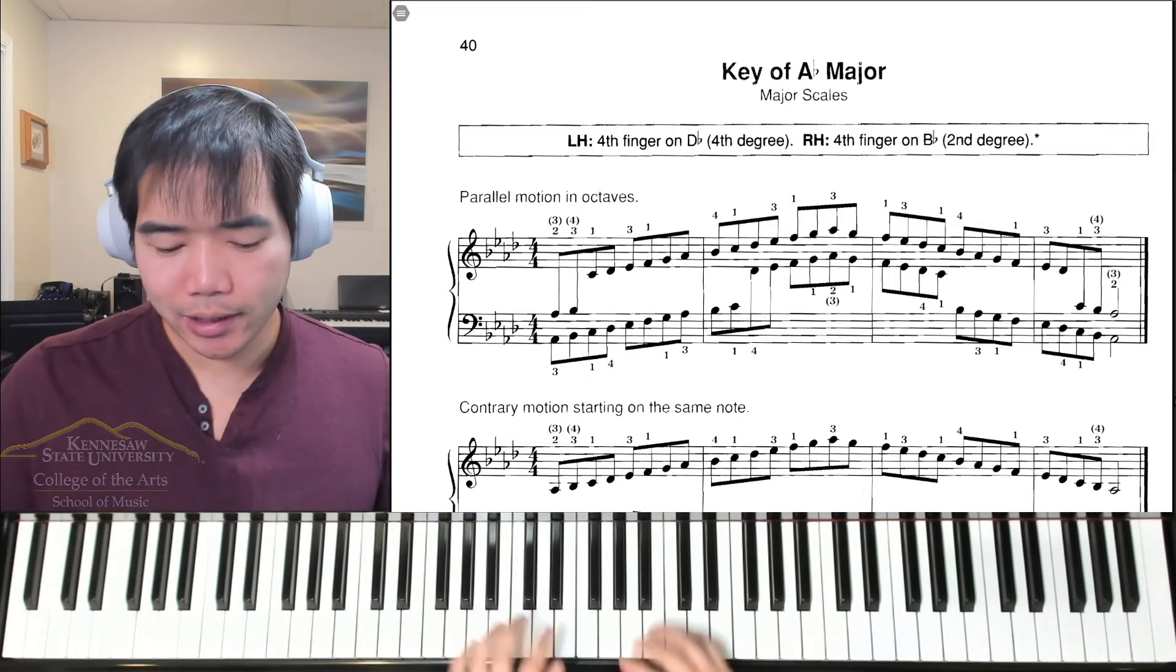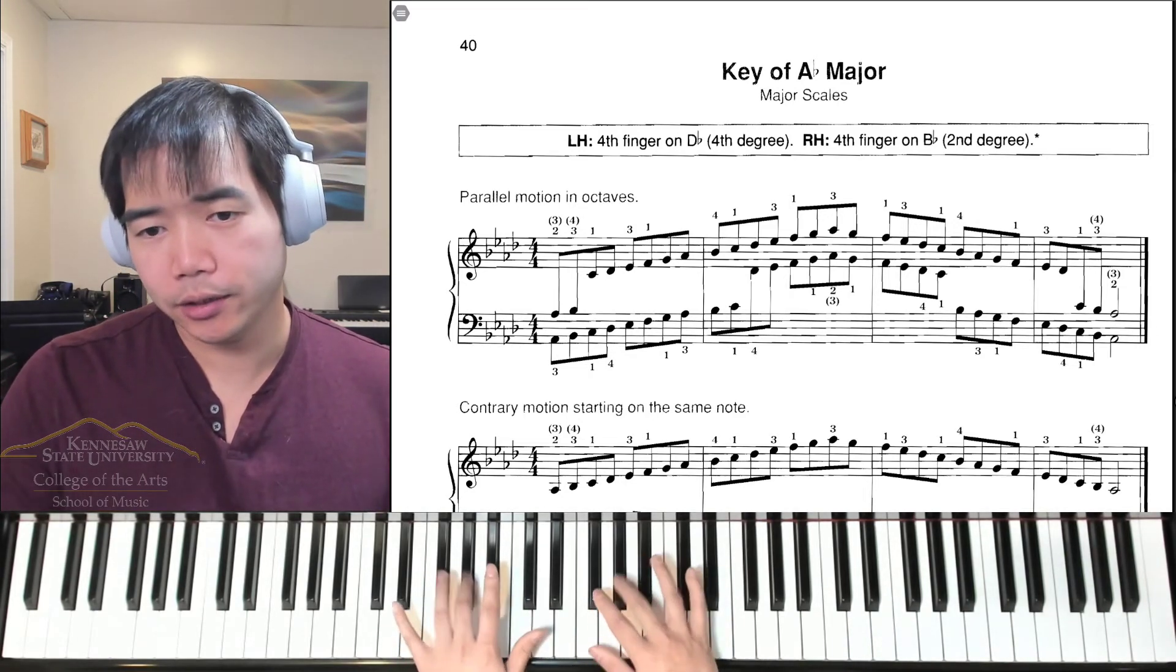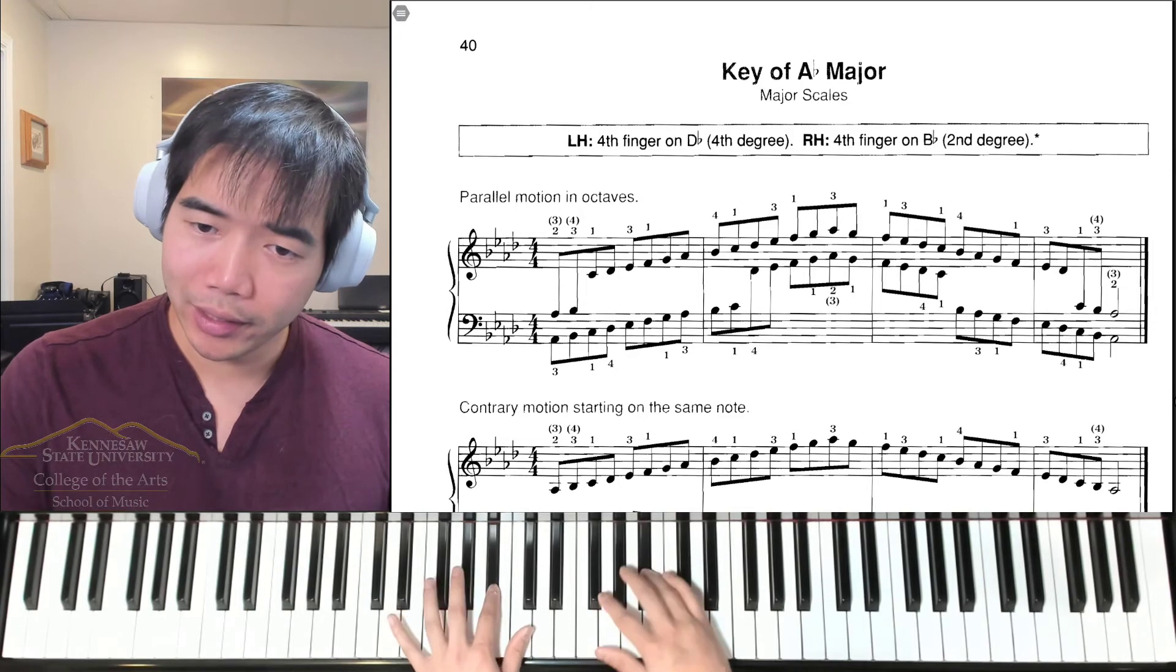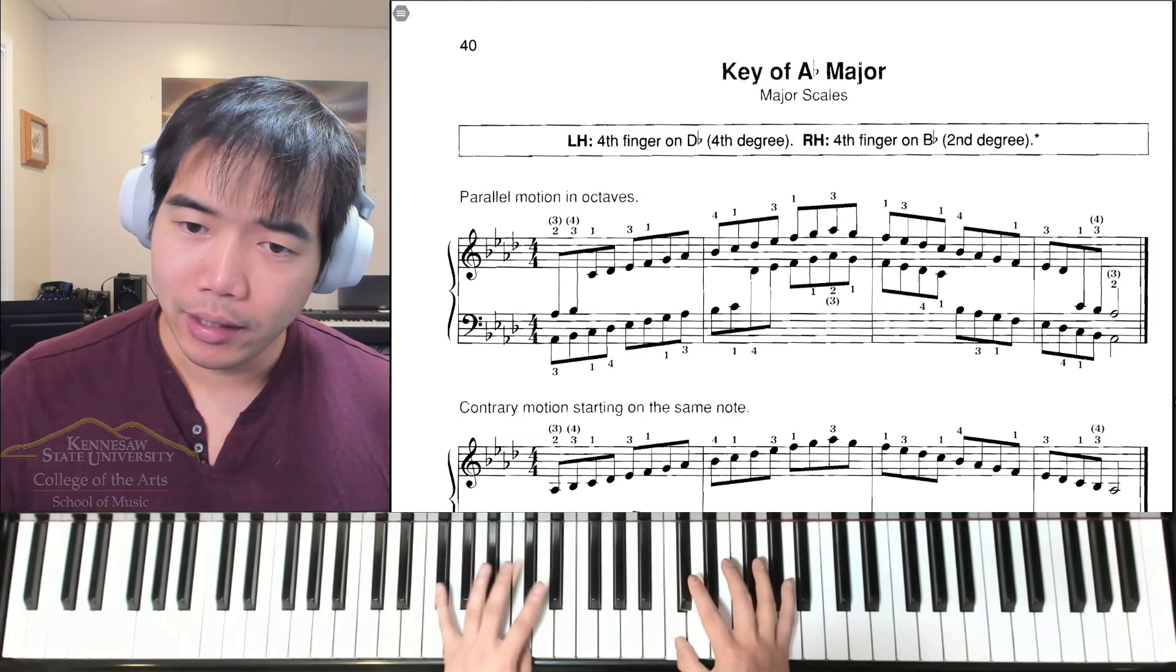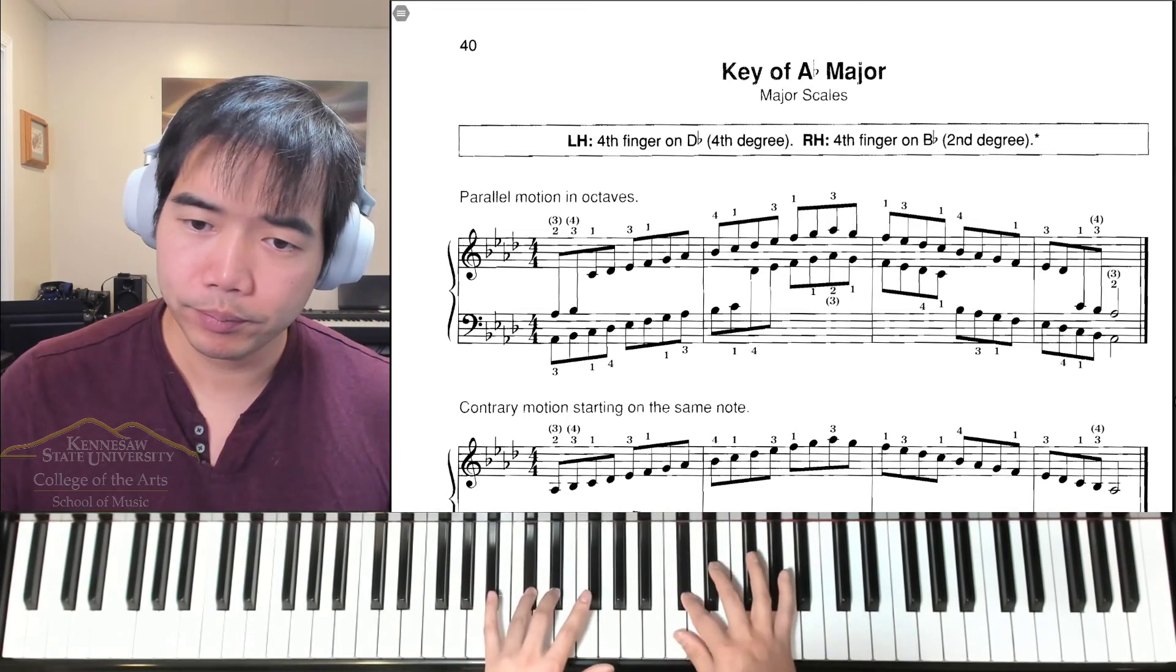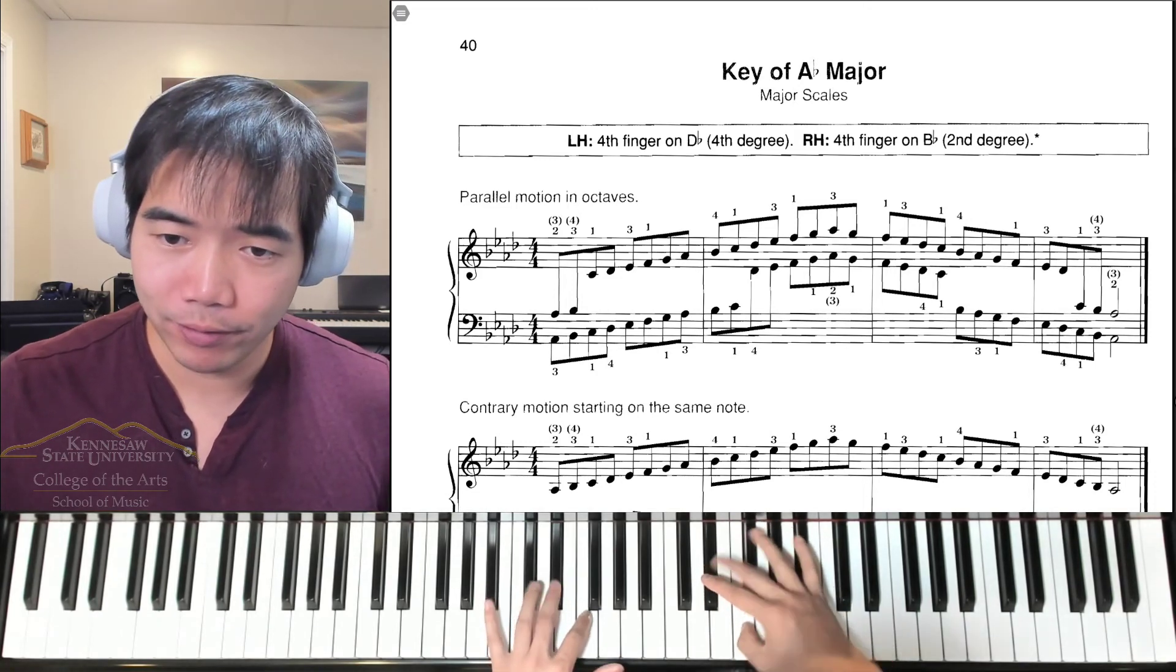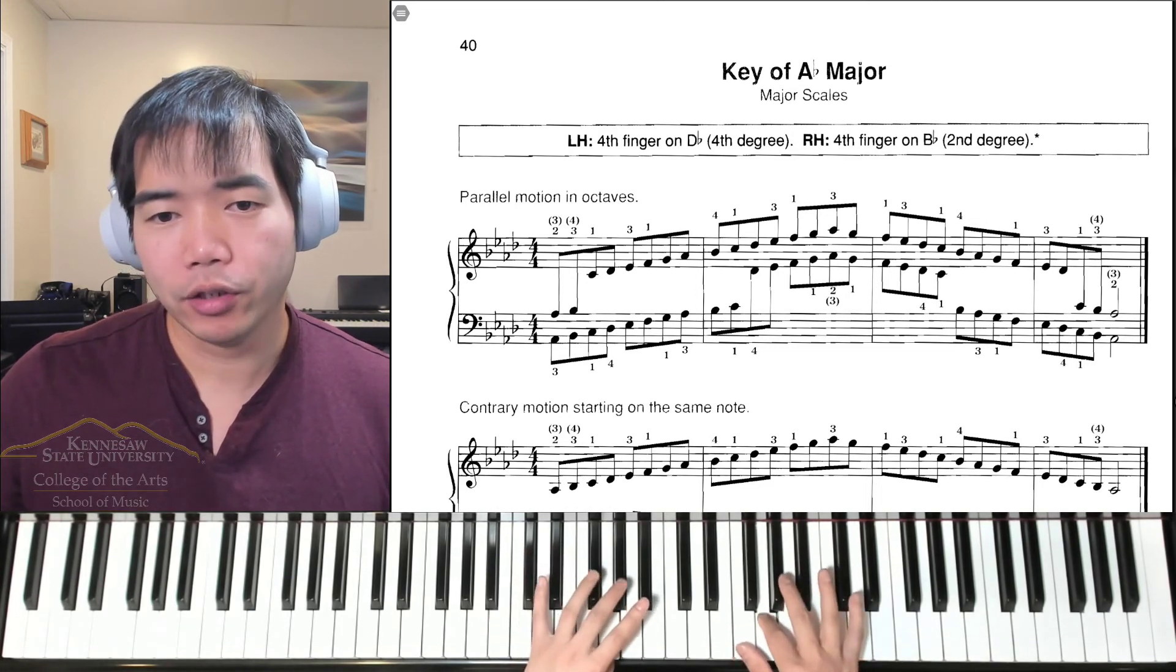So now we're going to try this hands together. Both hands starting third finger on A flat. Here we go. So we have third finger on A flat, then you go to B flat. Both thumbs play C. Left hand shifts to fourth finger D flat. Third fingers on E flat. Right hand shifts thumb to F, left hand second finger.